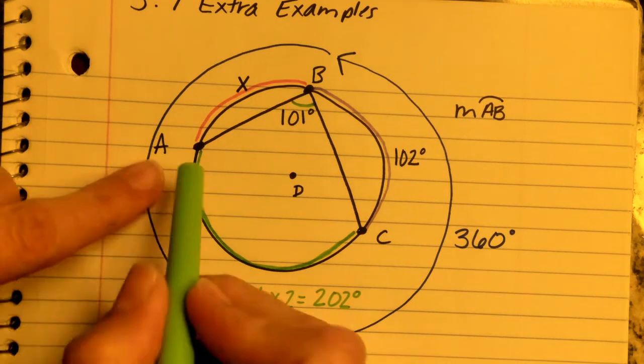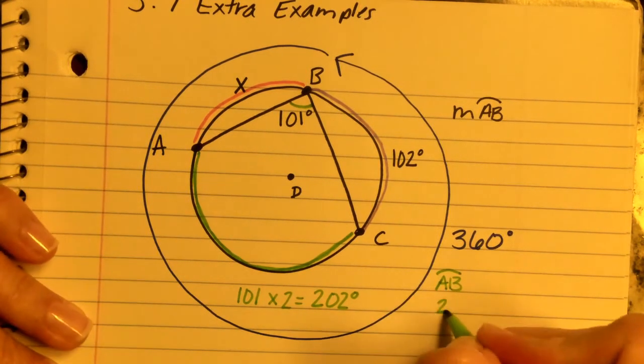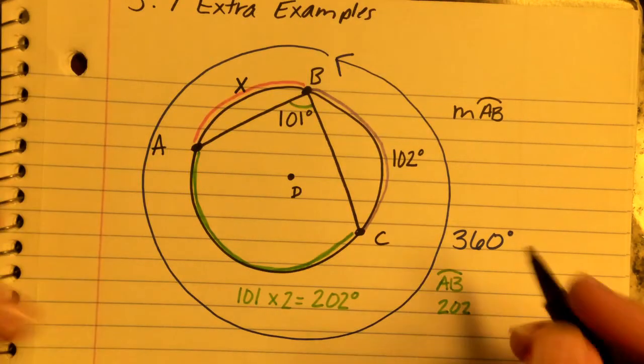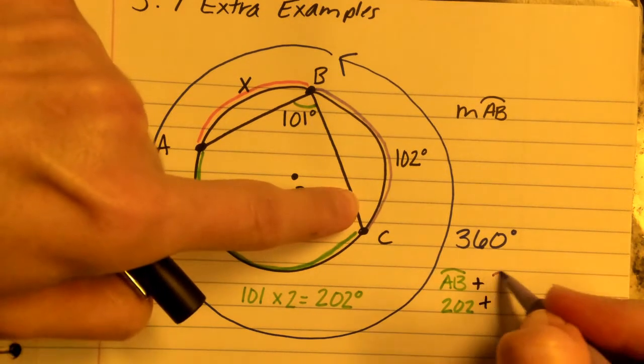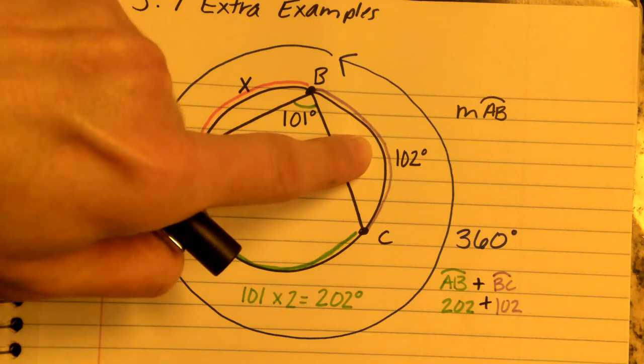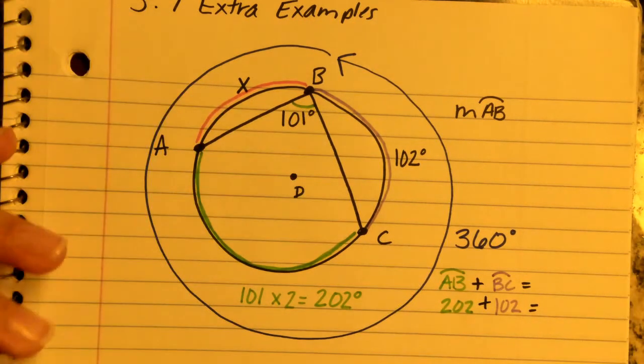We can say arc AC, which is 202 degrees, plus arc BC right here, which is 102 degrees, is going to equal...